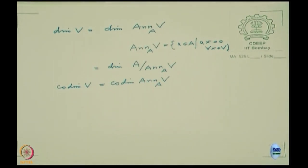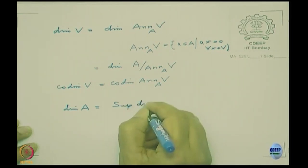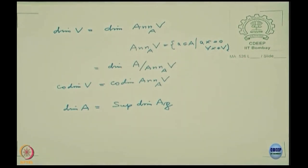One of the most important properties of dimension, known from topology and geometry, is that it is a local definition. Algebraically this means dim(A) equals dim of A localized. When I put a topology on Spec A, I will explain why this is the same as the earlier definition.